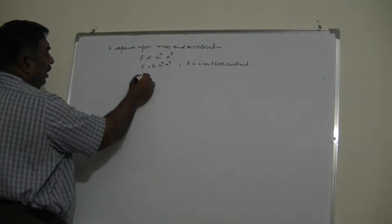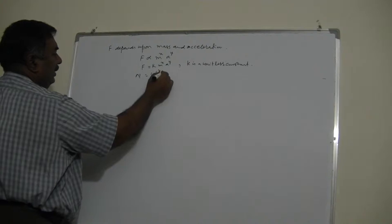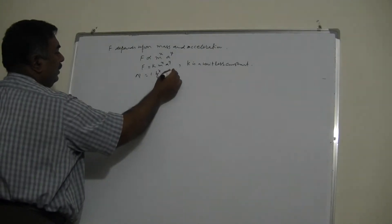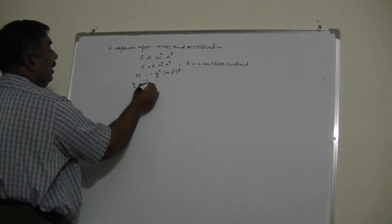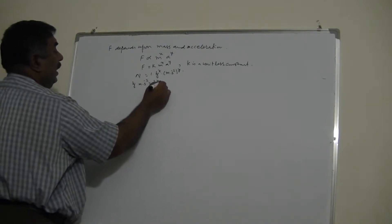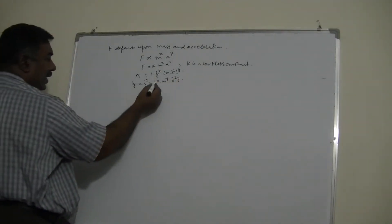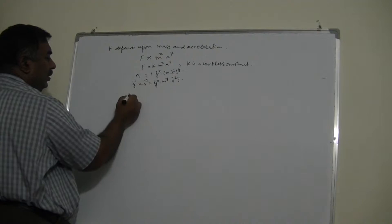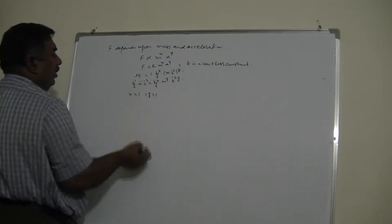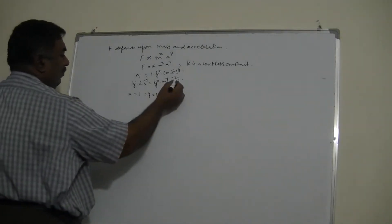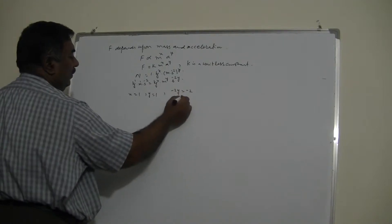Force is in Newtons, k is unitless, so I write: 1 = kg^x · (m/s²)^y. Newton equals kg·m/s², so: kg·m·s^(-2) = kg^x · m^y · s^(-2y). Comparing powers: for kg, x = 1; for m, y = 1; for s, -2y = -2, so y = 1.